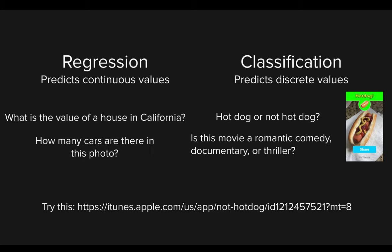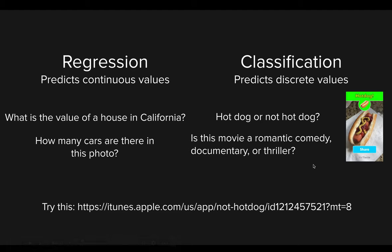Regression predicts continuous values — numerical or quantitative values. For example: what is the value of a house in California? How many cars are in this photo? Both outputs are always in numerical measure — a floating quantity, a continuous value. Classification predicts discrete values — more subjective and qualitative. We have features and we're getting an output classifying something into a category rather than a number.